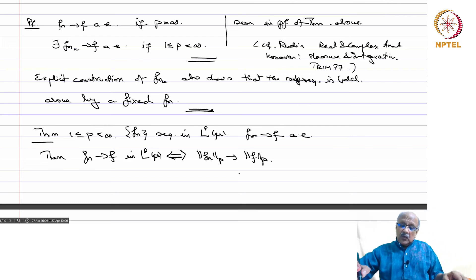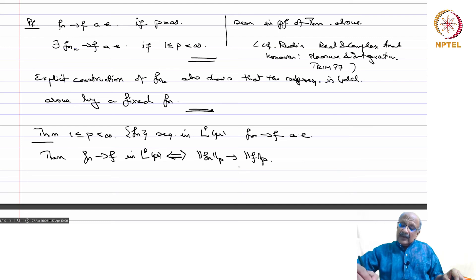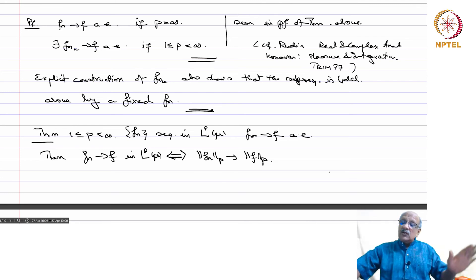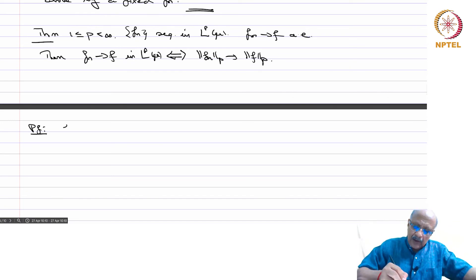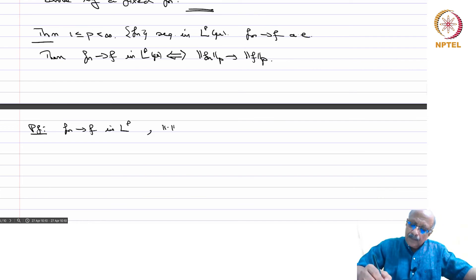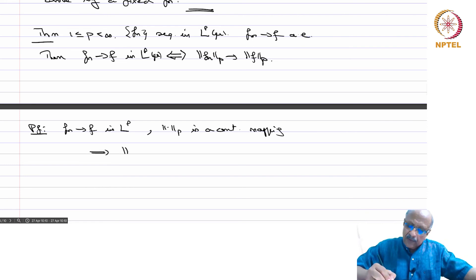So you have pointwise convergence and want to know when it also gives convergence in LP(mu), which involves convergence of an integral. The easier condition is: if norm(f_n)_p converges to norm(f)_p in addition to pointwise convergence, then you also have convergence in LP. Proof: f_n converges to f in LP implies norm is a continuous mapping, and therefore norm(f_n)_p converges to norm(f)_p.